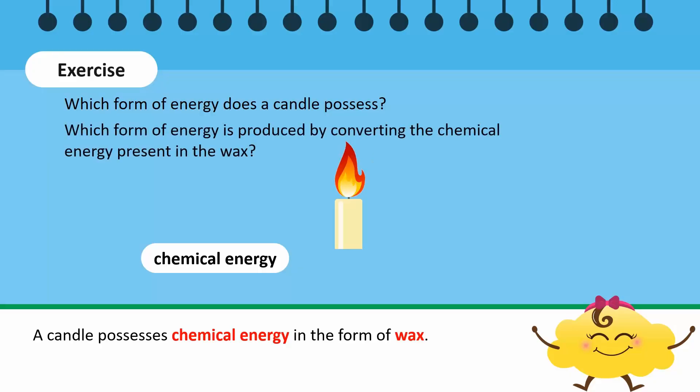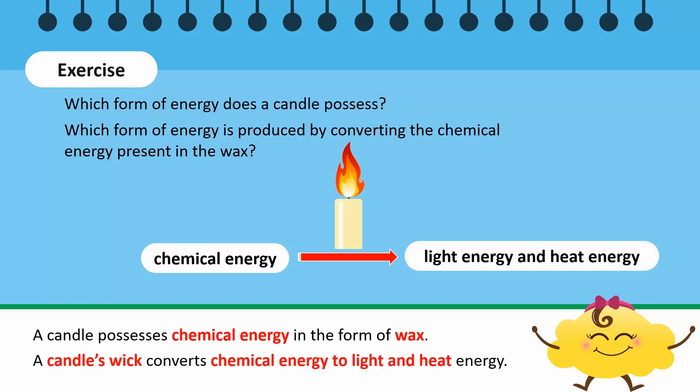Which form of energy is produced by converting the chemical energy present in the wax? It's light energy and heat energy. The candle's wick is an energy converter which burns and converts the chemical energy from the wax to light energy and heat energy.